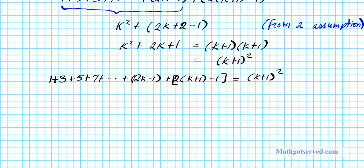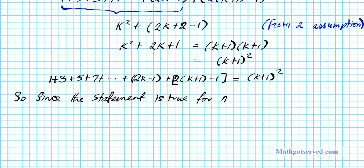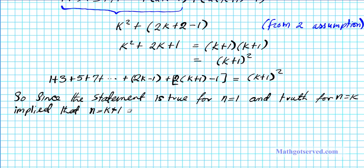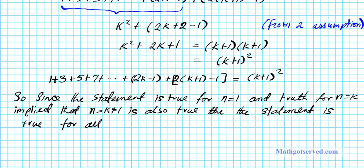So we've just shown that 1 plus 3 plus 5 plus 7 plus ... plus (2k minus 1) plus (2(k+1) minus 1) equals (k plus 1) squared. For our concluding remark: since the statement is true for the base case n equals 1, and truth for n equals k by our inductive hypothesis implies that n equals k plus 1 is also true, the statement is true for all n in the set of natural numbers. The proof is complete.